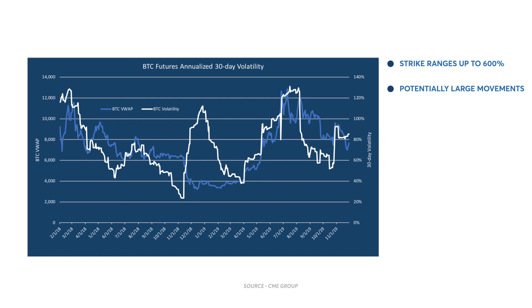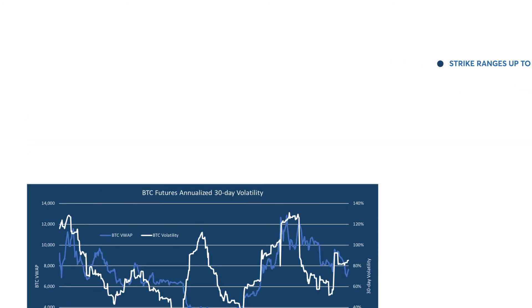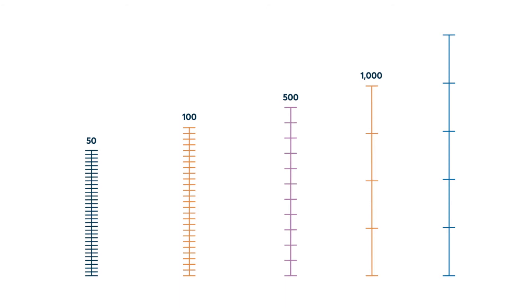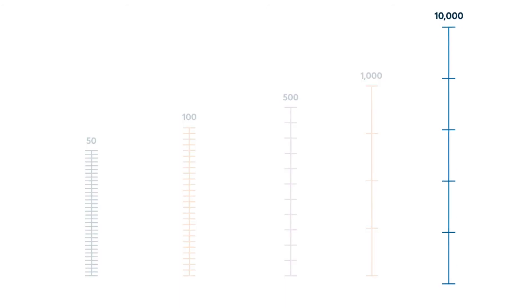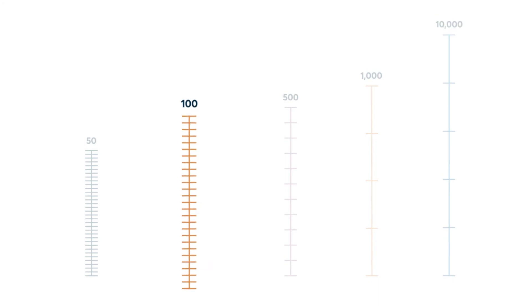Dependent upon the Bitcoin futures price or expiry, strike intervals will be available at 50, 100, 500, 1,000, and 10,000 points. The strike increments for very far out-of-the-money strikes will be larger than for the at-the-money strikes. Near-the-money strikes will be more granular to allow for greater precision when hedging. This is applicable across all monthly listings.